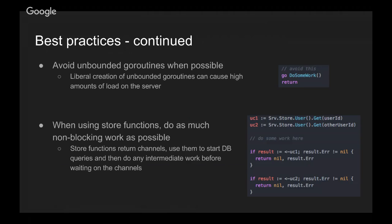A couple of things to think about when building application functions: avoid unbounded goroutines when possible. Liberal creation of unbounded goroutines can cause high load on the server. For example — this was actually a problem we had — when creating a post, which happens frequently, if you fire an unbounded goroutine every time, under high load the number of goroutines can keep climbing because they can't complete fast enough. Eventually you run out of memory and the server crashes. We do have some unbounded goroutines in the code, but we try to avoid them. If you do use goroutines, make sure you wait for them to finish before returning, if you can.